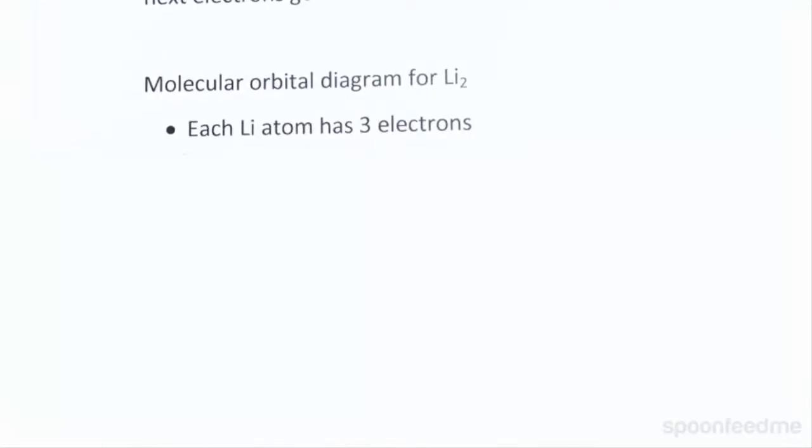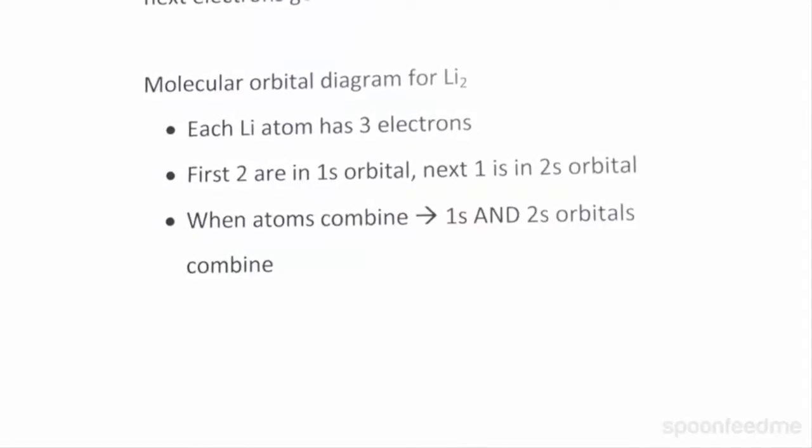So we're going to use lithium-2. Each lithium atom has three electrons. The first two electrons are in the 1s orbital, and the next electron will go into the 2s orbital, which we showed in an earlier video was the next lowest energy atomic orbital.